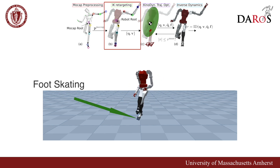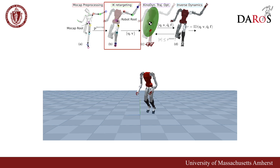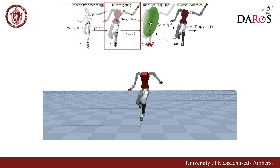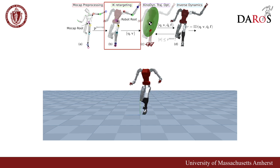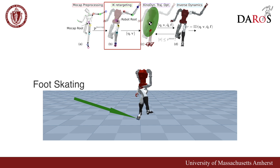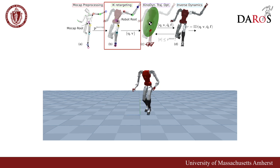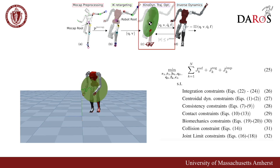Next, we use inverse kinematics to derive an initial rough kinematic trajectory that closely mirrors the MOCAP data. This serves as a reference and initial guess for the subsequent more non-linear kinodynamic trajectory optimization problem.